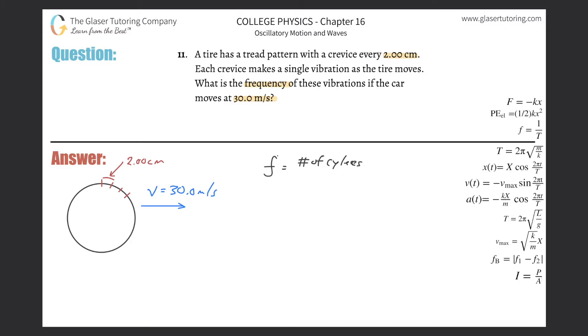...number of cycles per second. The term cycle is very general—it could be oscillations, waves, or wait a minute, contacts with the ground. Every second, that's basically what we have to find: the number of contacts per second.